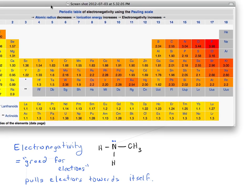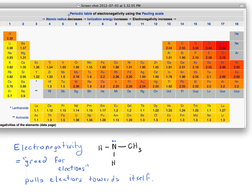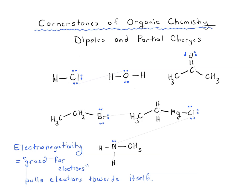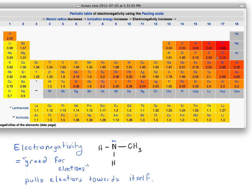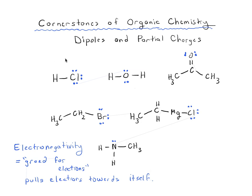We can compare electronegativity of different elements using measured electronegativity tables. Let's start with HCl — we ask ourselves whether the pair of electrons between hydrogen and chlorine is equally shared. The answer is no, because chlorine has an electronegativity of 3.16 and hydrogen's is about 2.2. That means chlorine is pulling more than its fair share of the electron pair from hydrogen. Because electrons are negatively charged, chlorine gets a partial negative charge (δ−) and hydrogen gets a partial positive charge (δ+).